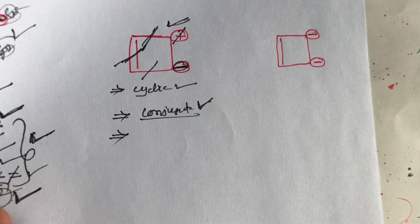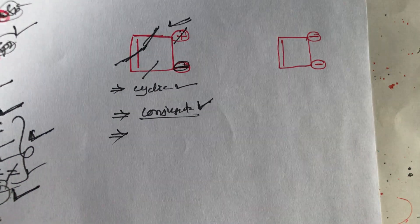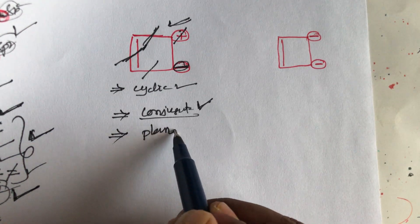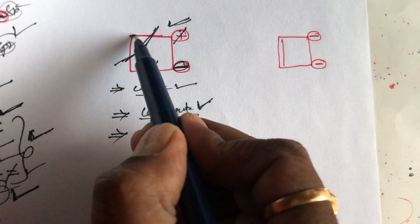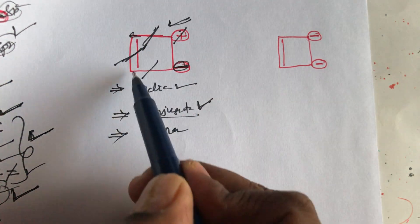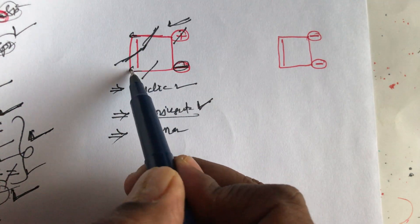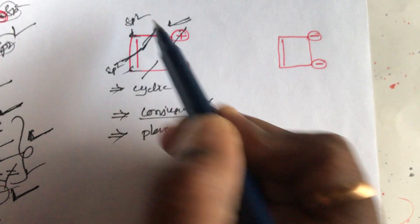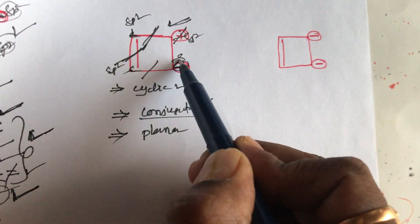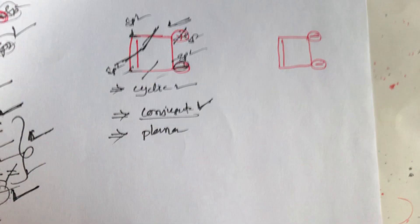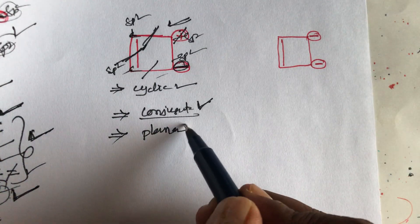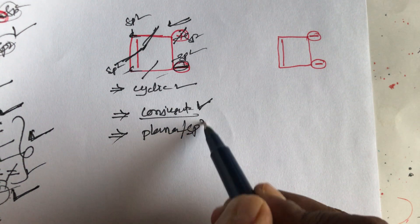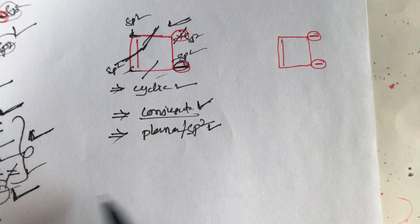What about the third condition? The compound must be planar. In this compound there are four carbons, and each and every carbon undergoes sp2 hybridization. All carbons undergo sp2 hybridization, giving a planar shape. So the third condition is also satisfied.